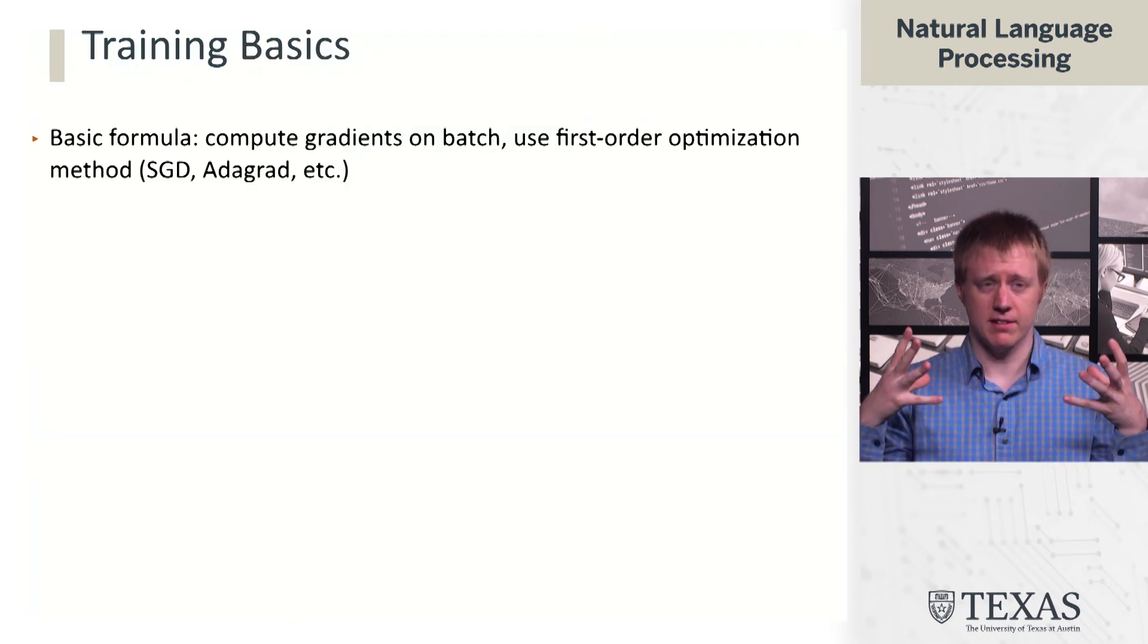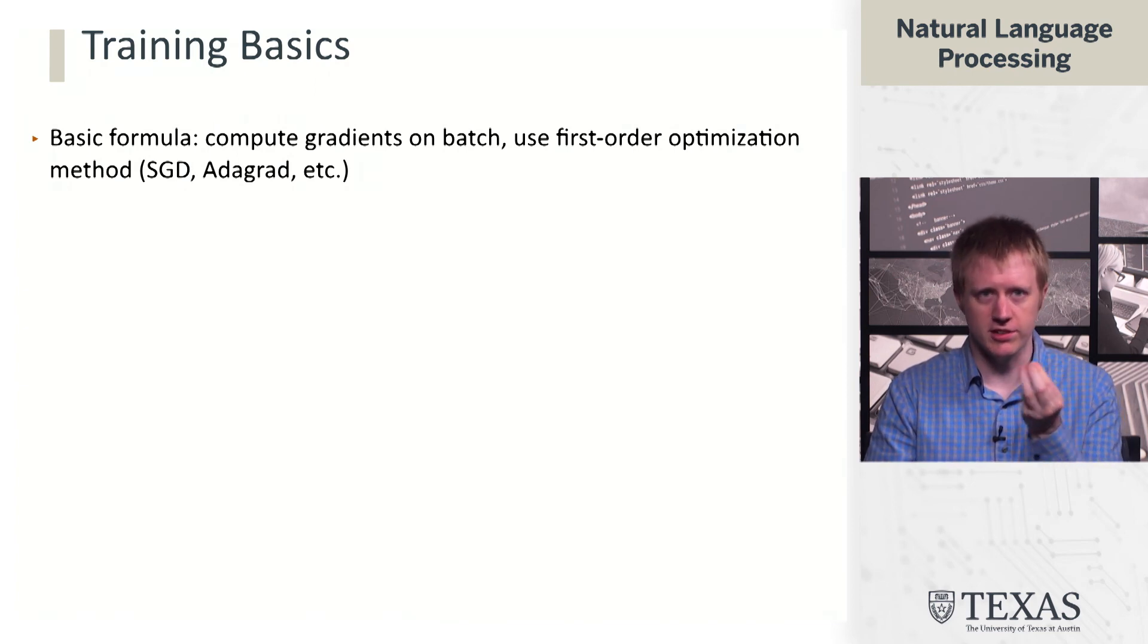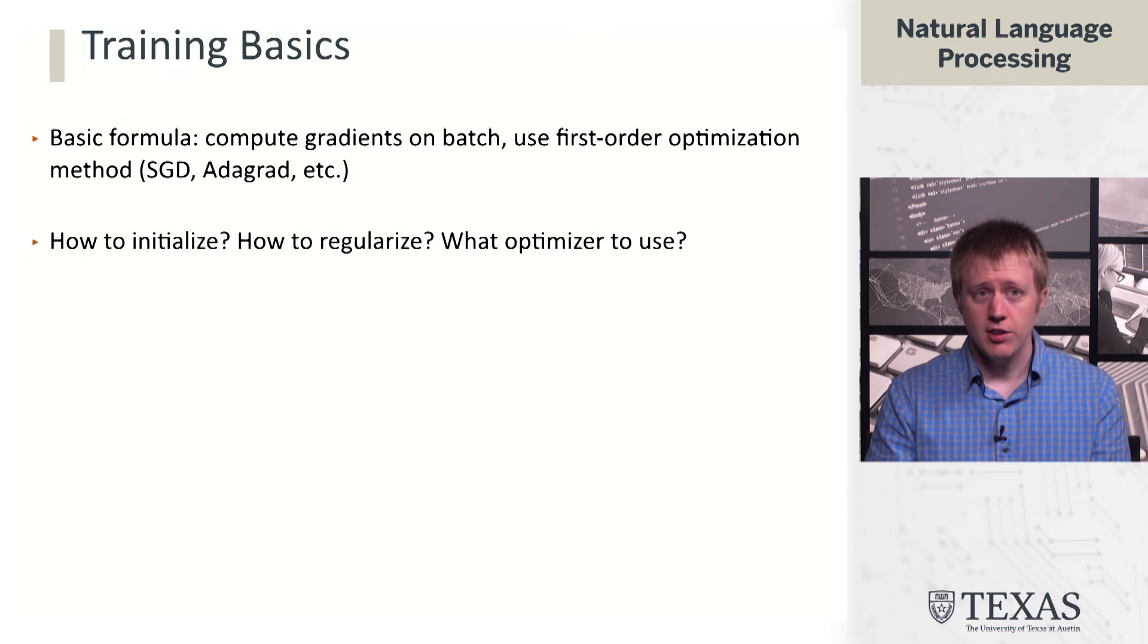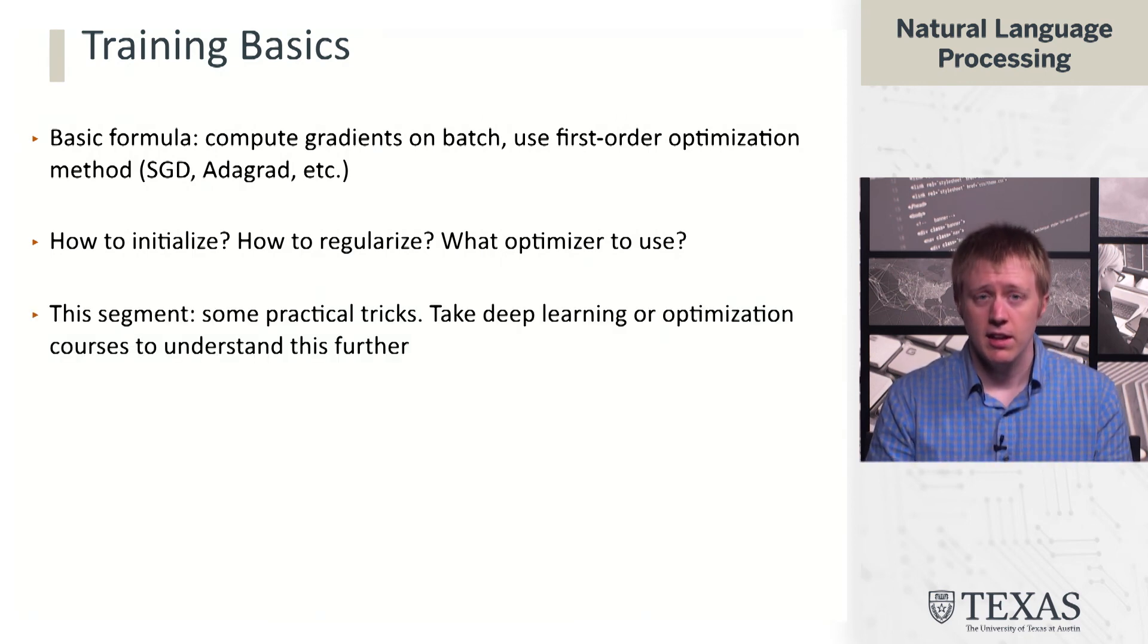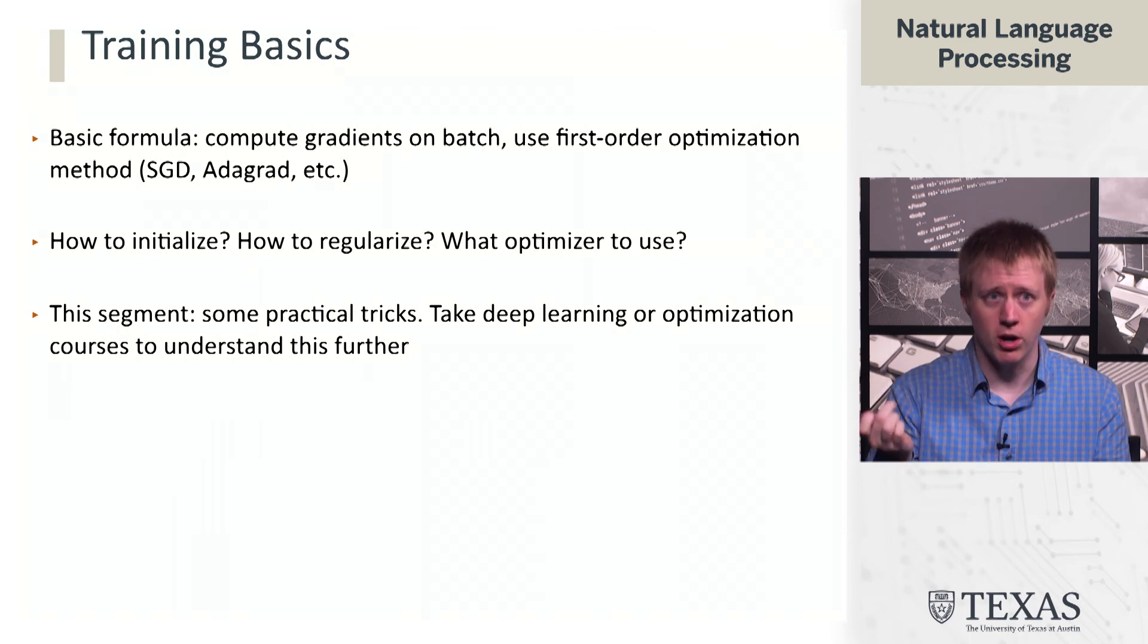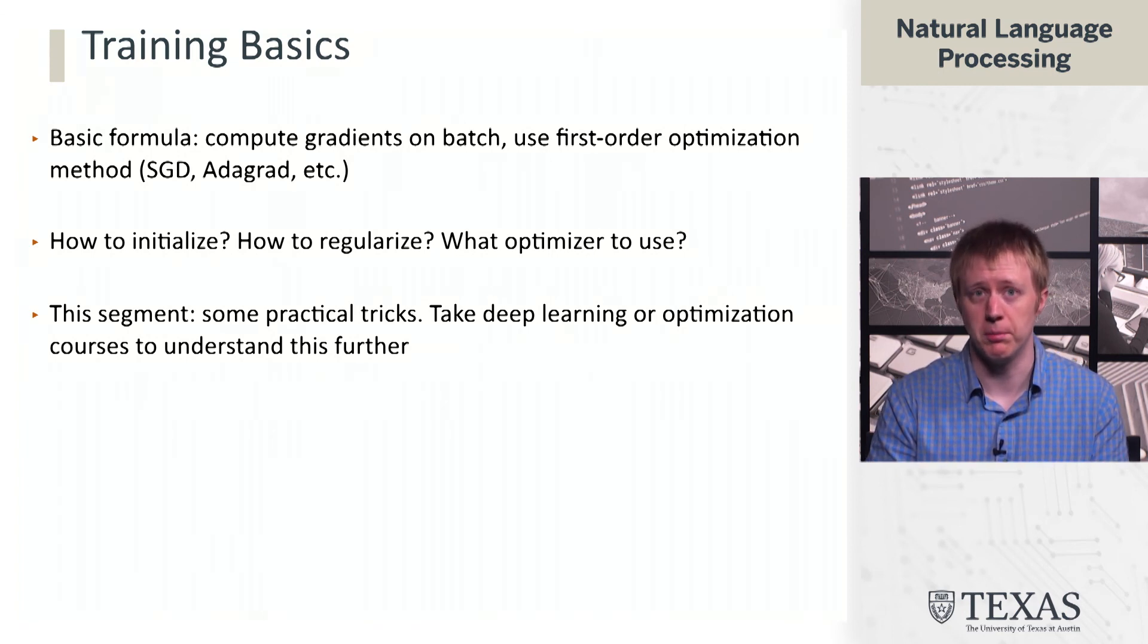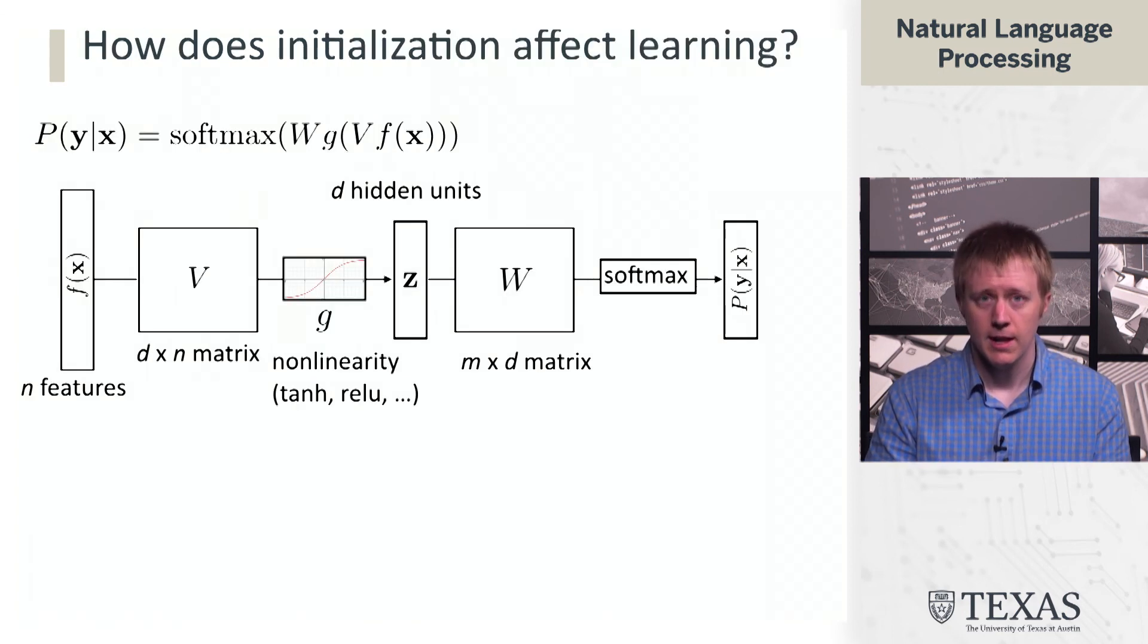The basic framework is that we have a batch, we compute gradients on it, and then we use one of these first-order optimization techniques that just need access to gradients. So the main questions we're going to try to answer here are initialization, regularization, and optimization. There is such deep theory behind all of these things that there's no way we can cover it. So there's entire courses you could take to try to understand these things more. But here we're going to talk about this mostly from a practical standpoint of what settings of hyperparameters you typically want to use.